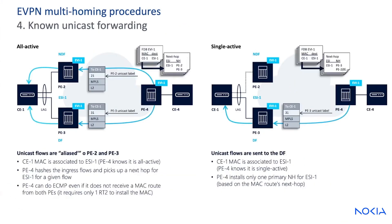For known unicast forwarding, unicast flows are aliased to PE1 and PE2. The CE1 MAC is associated to ESI1 with an RT2 route, and PE4 knows it's all-active. PE4 hashes the ingress flows and picks a next hop for the ESI for a given flow, and the unicast flows are sent to the DF. In single-active, CE1 MAC is associated to ESI1 so PE4 knows it's single-active, and PE4 installs only one primary next hop for ESI1 based on the MAC route's next hop.